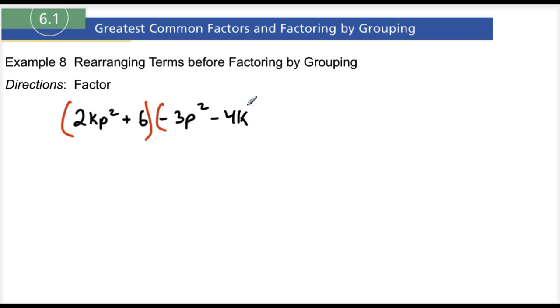You get 2kp² plus 6, so those have a 2 in common, but notice that these don't have anything in common right here. These won't have anything in common, so it's not gonna actually work. We're actually gonna need to rearrange these so that this will work here.